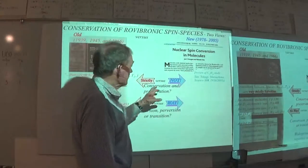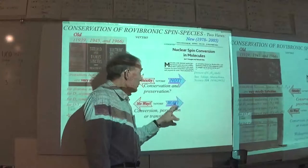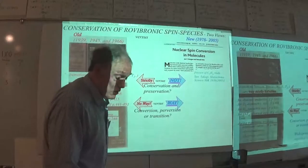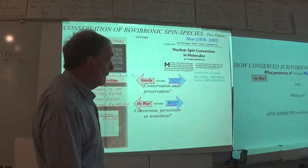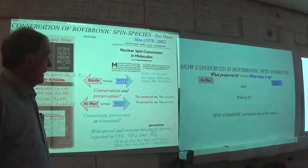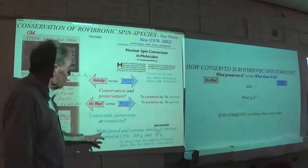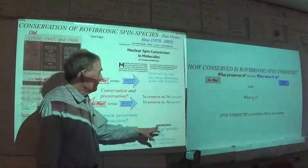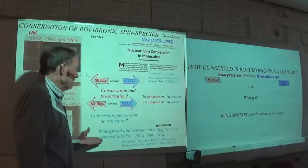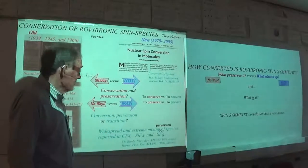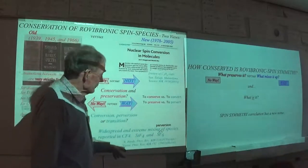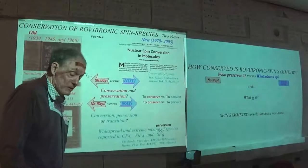Their idea is there is a way for species to interconvert. But what we found was that there's a really big way this can happen. When you look carefully at the spectra we're working with, there is widespread and extreme mixing — I would say a perversion of species — and that's what we're going to talk about today. This became very obvious as the high-resolution spectra of Kreiner and Jacquemart, and the theory of Jacquemart-Day and our theory, started to look at this in more detail than had ever been imagined.